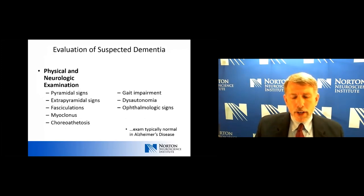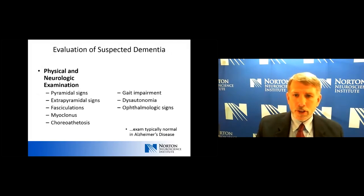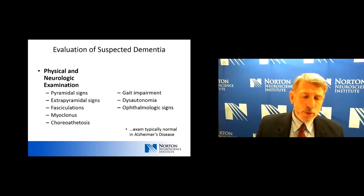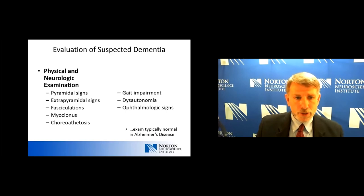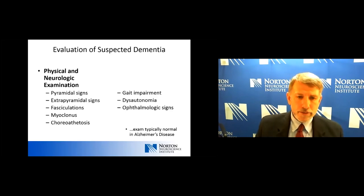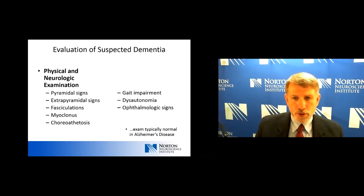On the physical or neurological exam, with Alzheimer's disease the exam is often completely normal and can be fairly brief. But there are clues that would point us in a direction other than Alzheimer's disease. For example, if we see pyramidal signs — weakness or spasticity — that may lead us toward vascular disease. If we see extrapyramidal signs like bradykinesia or hypertonicity, that might point us more towards a Parkinsonian disorder.